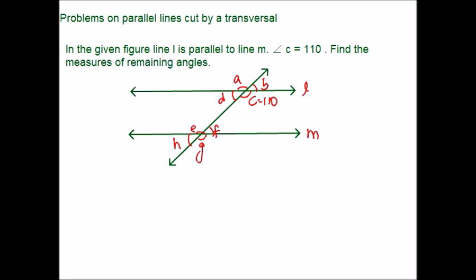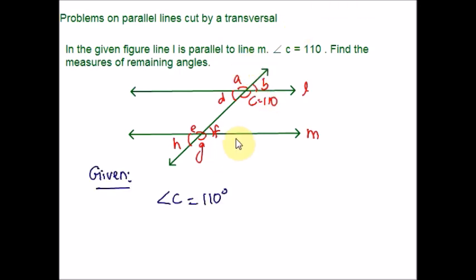Here is example number one. In the given figure, line L is parallel to line M, and one of the angles is given: angle C is 110 degrees. We are supposed to find the measures of the remaining angles A, B, D, E, F, G, H. For more details on parallel lines cut by a transversal, you can refer to a previous video.